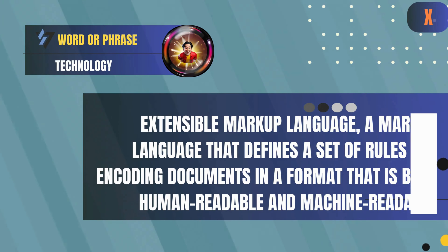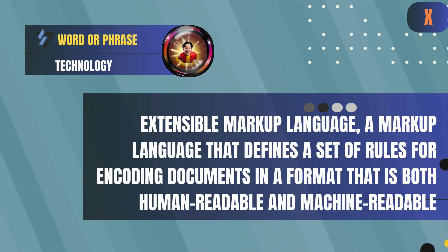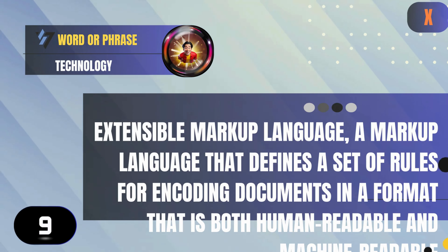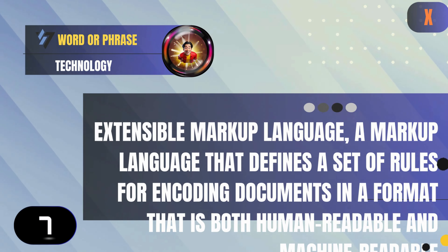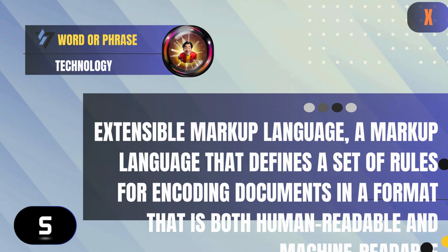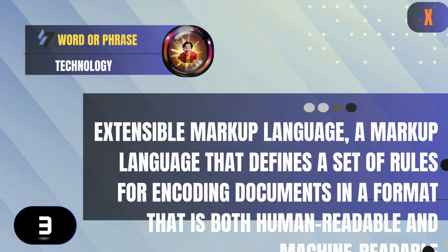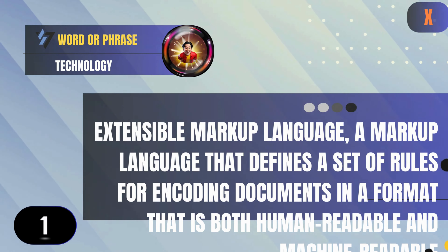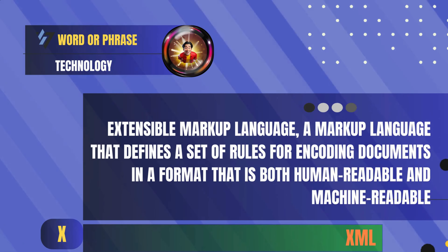X: Extensible Markup Language — a markup language that defines a set of rules for encoding documents in a format that is both human-readable and machine-readable. Answer: XML.